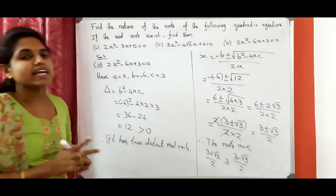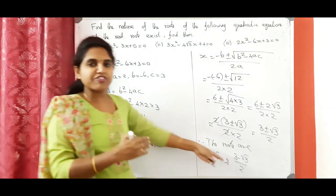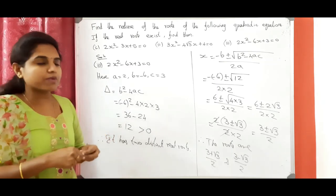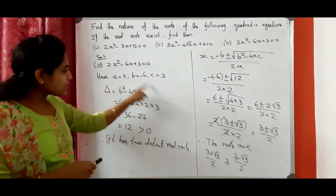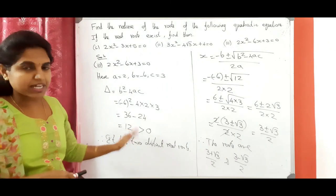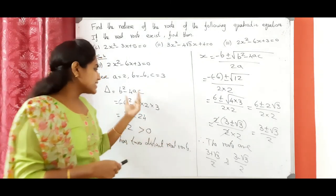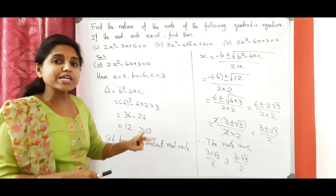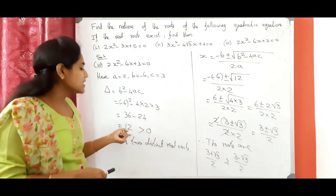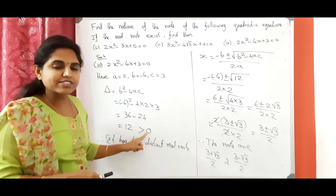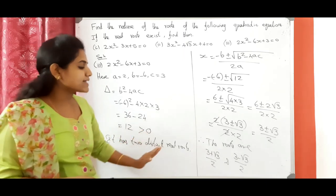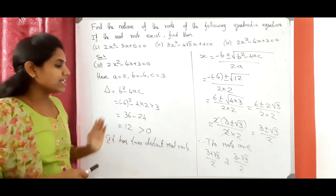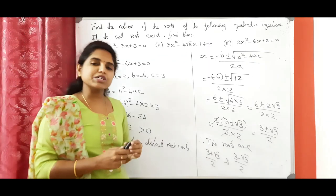We got two distinct real roots — two different real roots. To summarize: first, find the discriminant of the quadratic equation, then check the value. If it equals 0, it has two equal real roots. If positive or greater than 0, it has two distinct real roots. If negative, there are no real roots. That is what we have to remember. Thank you, students.